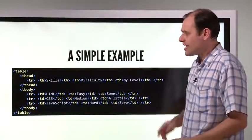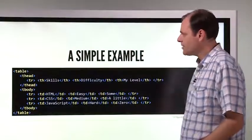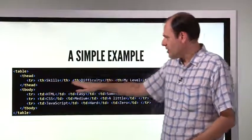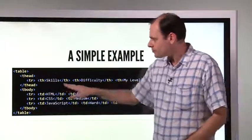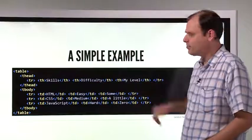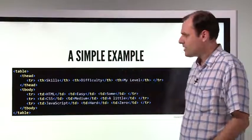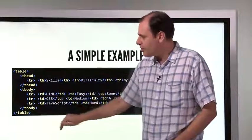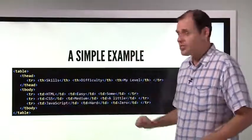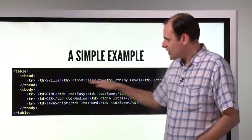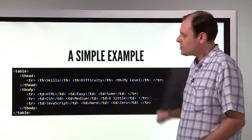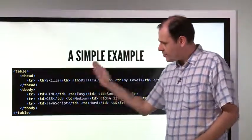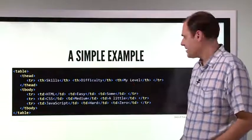Now, if you put it all together, you're going to get an example something like this. There's our header row. Skills, difficulty, my level. That's three columns being constructed. And then into the main part of the table, the body part, we have three rows in this example. Just like the header, we have three boxes, and that's going to give us three columns.